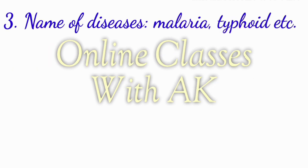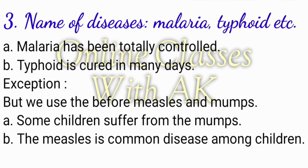According to the third rule, we will not use any articles with the names of diseases, like malaria or typhoid. For example: 'Malaria has been totally controlled.' Before malaria we will not use any article. Second example: 'Typhoid is cured in many days.' Before typhoid, we will also not use any article.